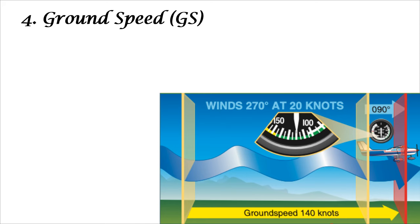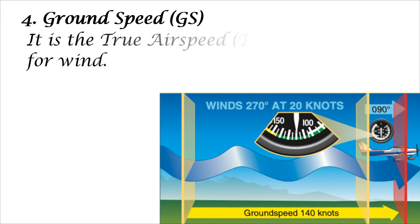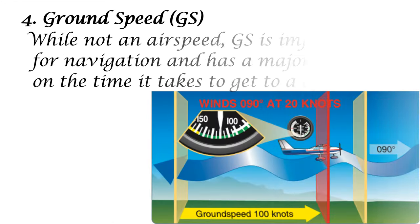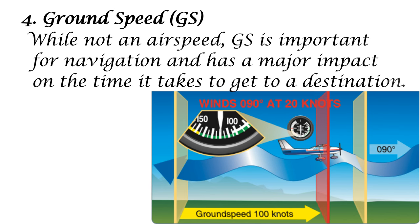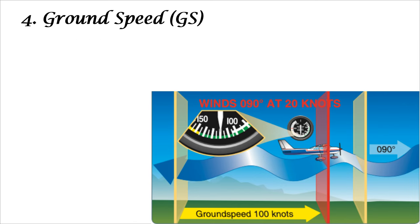Four: Ground Speed, GS. Ground Speed is the actual speed of the airplane over the ground. It is the True Air Speed, TAS, adjusted for wind. While not an airspeed, GS is important for navigation and has a major impact on the time it takes to get to a destination. GS decreases with a headwind and increases with a tailwind.